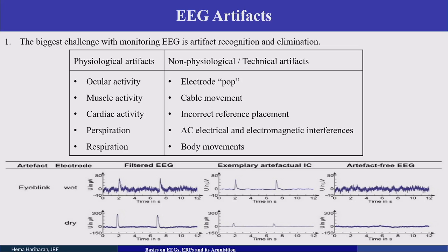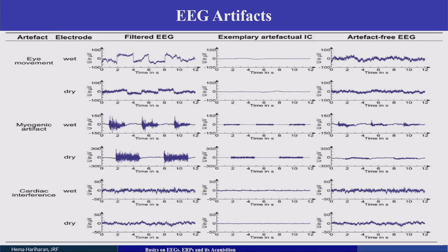Eye blink artifacts produce a pointed peak in the filtered EEG. We first identify the artifact, remove it from the filtered signal, and then get the artifact-free EEG signal. Similarly, eye movement also produces artifacts that can be eliminated to obtain a clean signal.